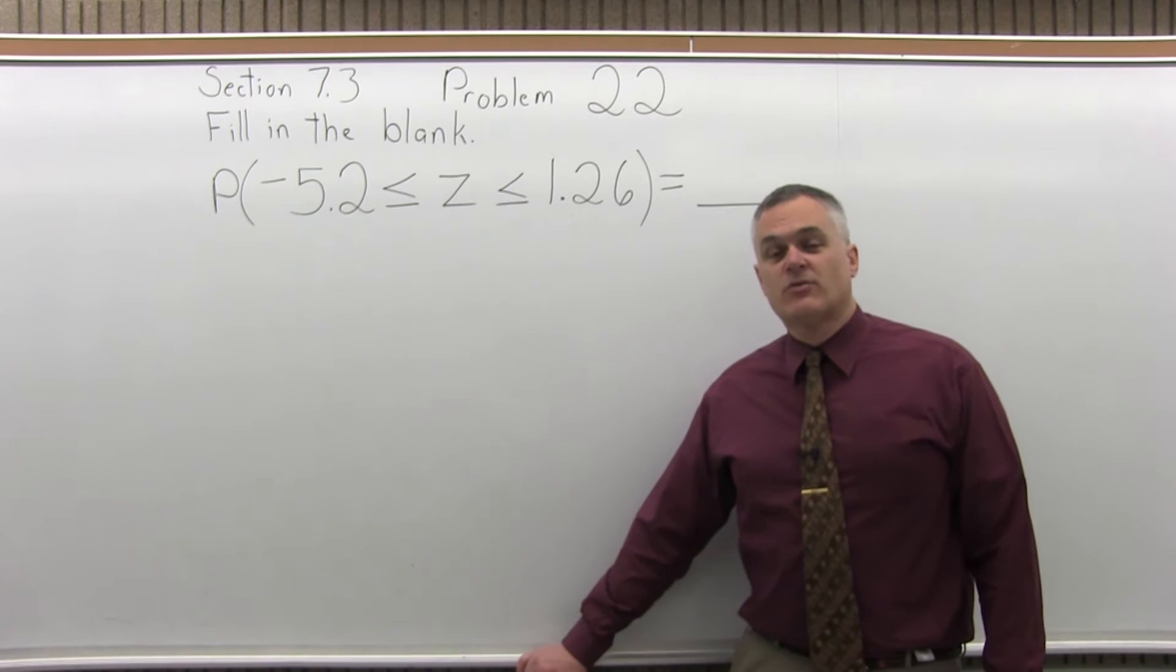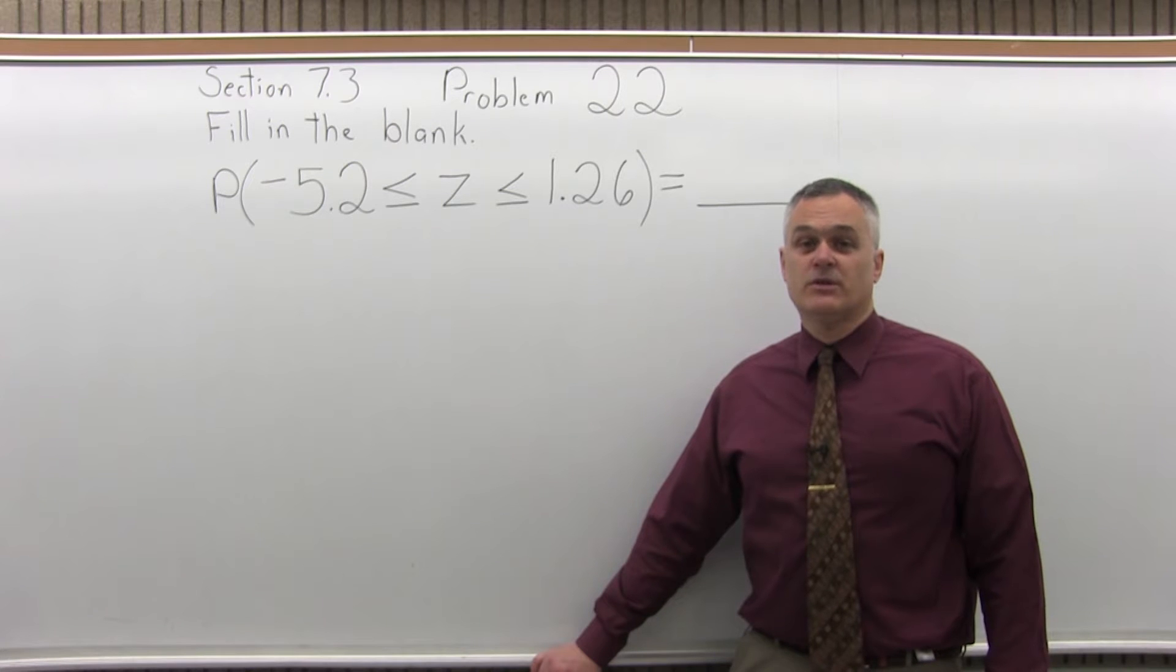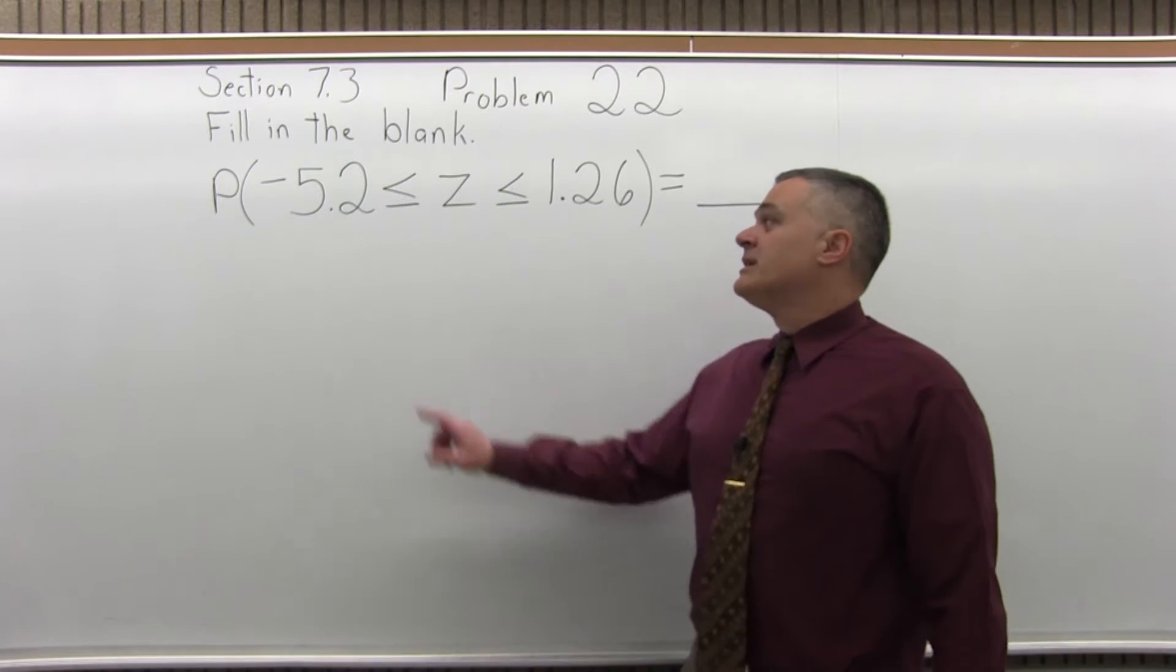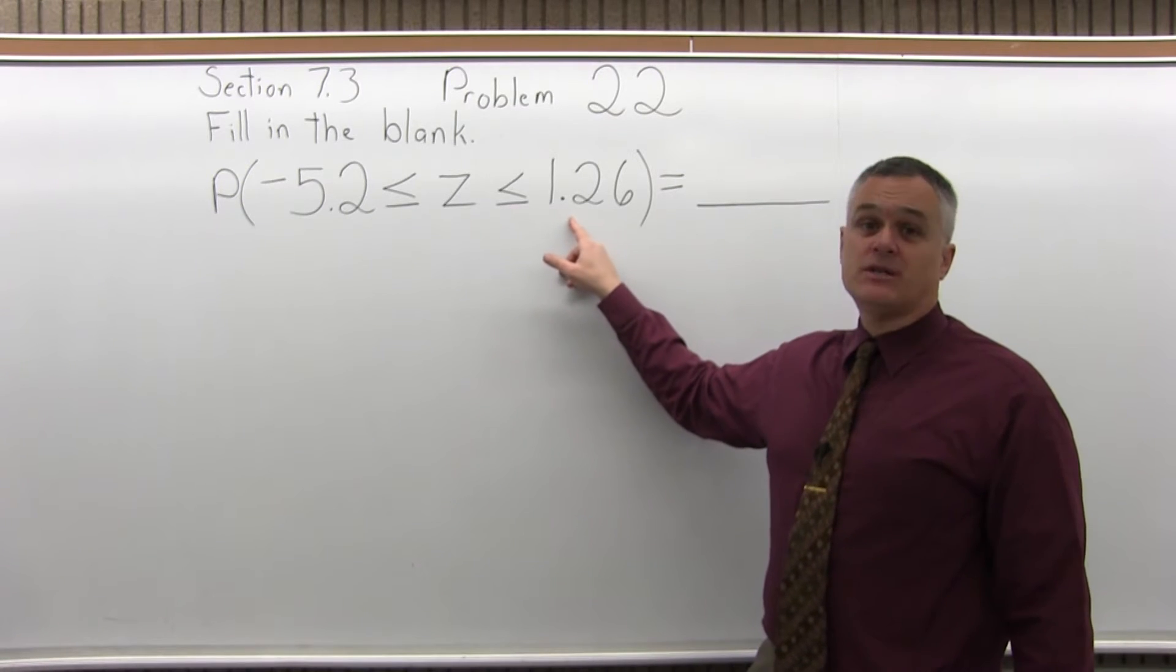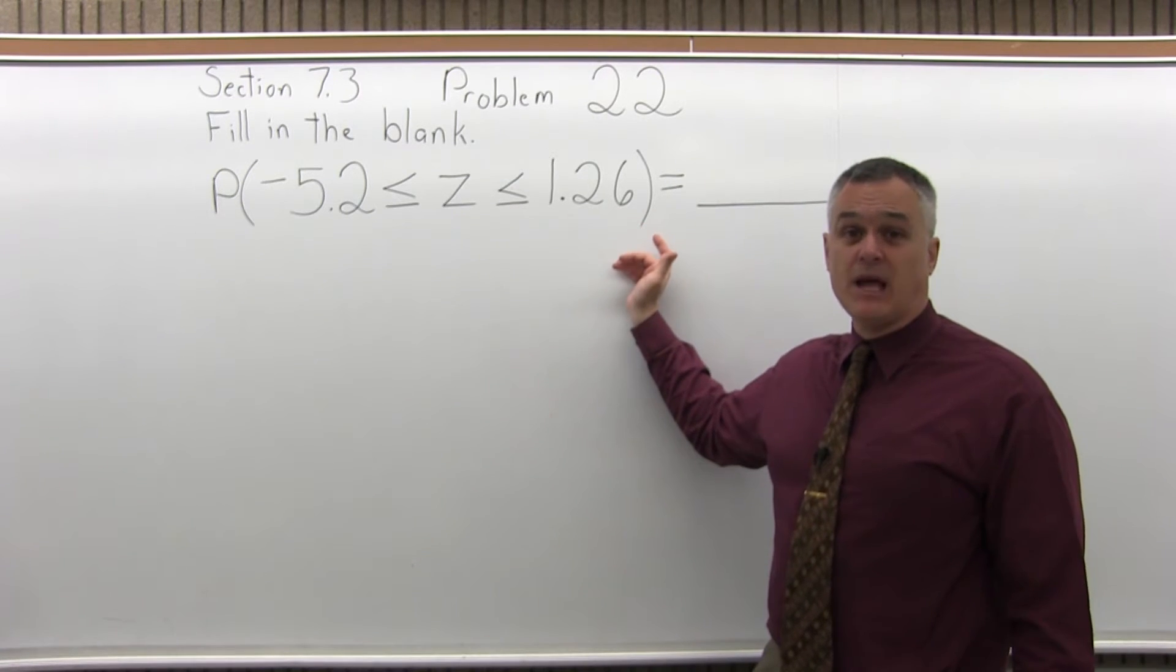This is Section 7.3, Problem number 22. Fill in the blank: the probability that negative 5.2 is less than or equal to z is less than or equal to positive 1.26 equals blank.